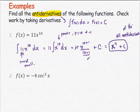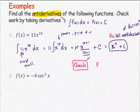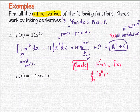We check the work for the antiderivative of f(x) = 11x^10. The relationship is that capital F prime equals lowercase f, so the derivative with respect to x of x^11 plus C equals 11 times x to the power 10. Checked.